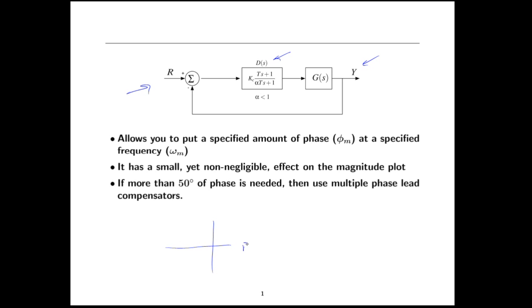Just so you remember what a phase lead compensator looks like from a pole zero diagram perspective, you have a zero and a pole and the zero is closer to the imaginary axis than the pole. The way that this compensator is described with the T and the alpha T means that this distance is 1 over T and this distance is 1 over alpha T where alpha is less than 1. We can also write this in Evans form and in that case we'd have KC times T S plus 1 over alpha T S plus 1.